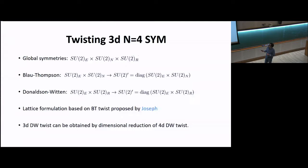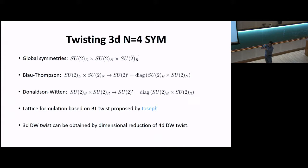Let me go back to thinking about three dimensions. If we want to perform an analogous twist in 3D N=4 super Yang-Mills, we consider the global symmetries: SU(2)_E (the rotation group in three dimensions), SU(2)_R from the dimensional reduction from 4D N=2, and SU(2)_N with a six-dimensional origin — the rotations in the three internal directions when you dimensionally reduce. There are two types of twists: one obtained by Blau and Thompson, taking the diagonal subgroup of the rotation group with the internal SU(2)_N; and the Donaldson-Witten twist, taking the diagonal subgroup of the rotation group with the SU(2)_R symmetry group.